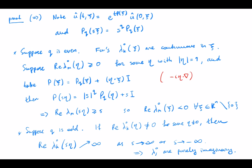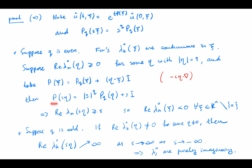Suppose for some non-zero eta the real part of the eigenvalue is non-negative. Then because q is even — q is at least two — we can perturb by a first-order operator. In real space that looks like this. By perturbing by this first-order operator we can ensure that this eigenvalue, if you scale it, blows up. So the real part must be strictly negative, which proves that if q is even it must be Petrovskiy parabolic.